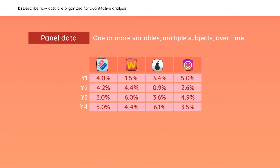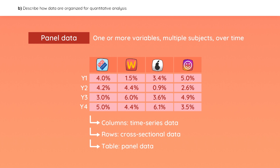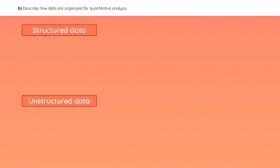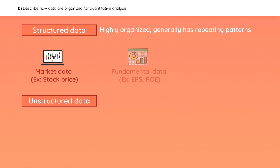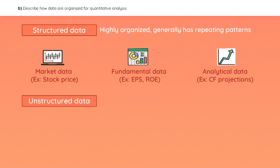In this example, it's the entire table of returns for the four stocks over four years. Notice that the columns in this table are time series data, the rows are cross-sectional data, and the entire table is panel data. You can also categorize data based on how it's organized. Structured data is highly organized and generally has repeating patterns — think of traditional sources like market data, fundamental data, or analytical data as examples.